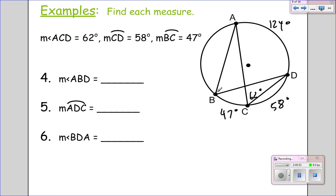Now angle ABD is also an inscribed angle. And it intercepts the same arc. You see the points are both on A and D. So this will also be half of 62 degrees for angle ABD.